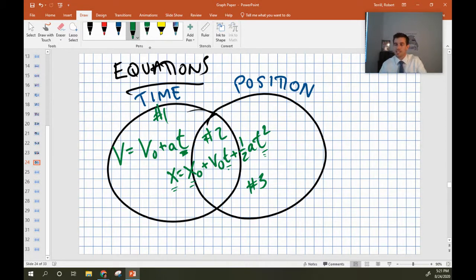And then finally, our last equation is this one here. The final velocity squared is equal to the initial velocity squared, plus two times a times the change in position, also known as the displacement. Notice this one has no time. It's only position. And that's why I use this Venn diagram to help me separate them out.